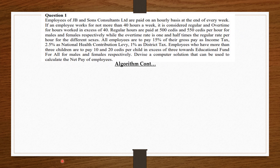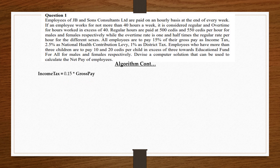Knowing our gross pay, we can find our deductions. All employees pay 15% of gross pay as income tax, so income tax equals 0.15 times gross pay. The national health contribution levy is 2.5%, so NHI levy equals 0.025 times gross pay. The district tax is 1%, so district tax equals 0.01 times gross pay.